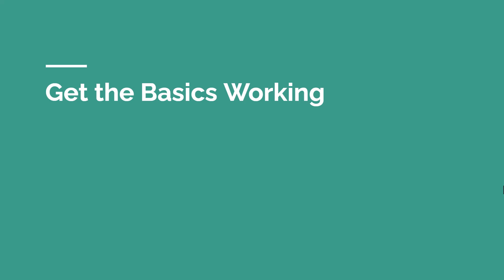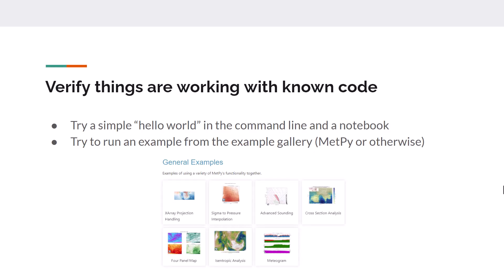After you install, just get the basics working. Don't immediately try to dive into your dual radar synthesis problem — make sure the installation works first. Do this with known code. Try a simple hello world on the command line and in a Python notebook, which are a really great tool. Also try running an example from the example gallery. If you're going to be using MetPy, look at the MetPy examples, download one, and run it. Same for matplotlib, NumPy, Dask, or whatever library you're using that you're not familiar with.